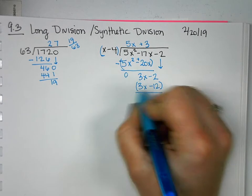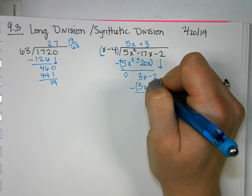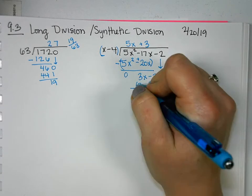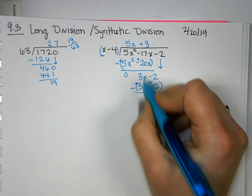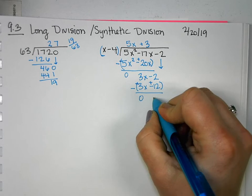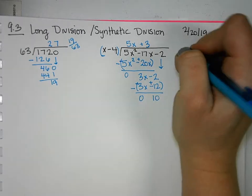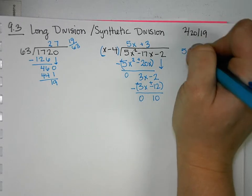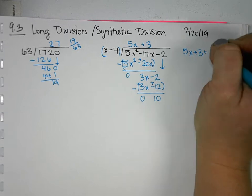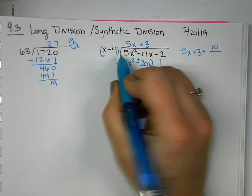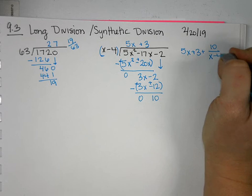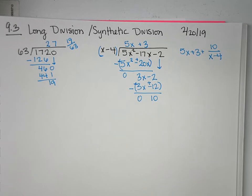And again, we're subtracting, so we have to distribute the negative. So when we do that, this is going to become a plus. That'll be minus. So again, those will cancel out, and we'll get 10. So we'll say 5x plus 3 plus 10 over what we divided by, x minus 4. And that would be your final divided answer.